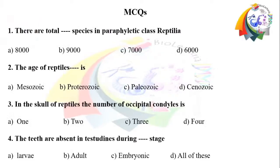Our first question: There are a total dash number of species in paraphyletic class Reptilia. Option A is 8,000. Option B is 9,000. Option C is 7,000, and Option D is 6,000.